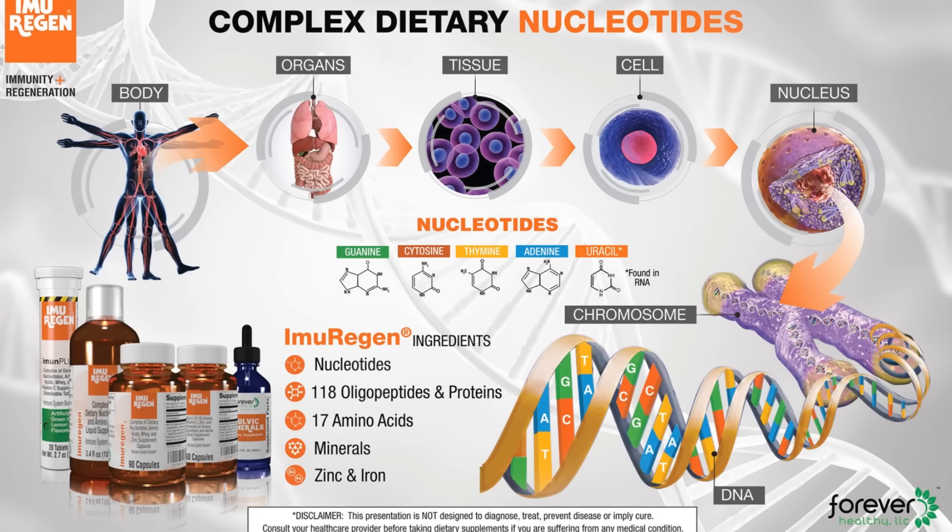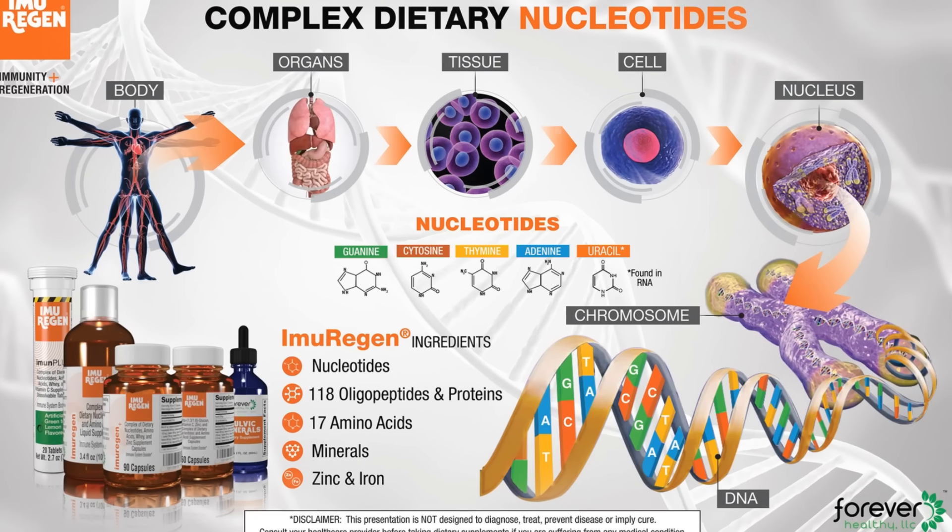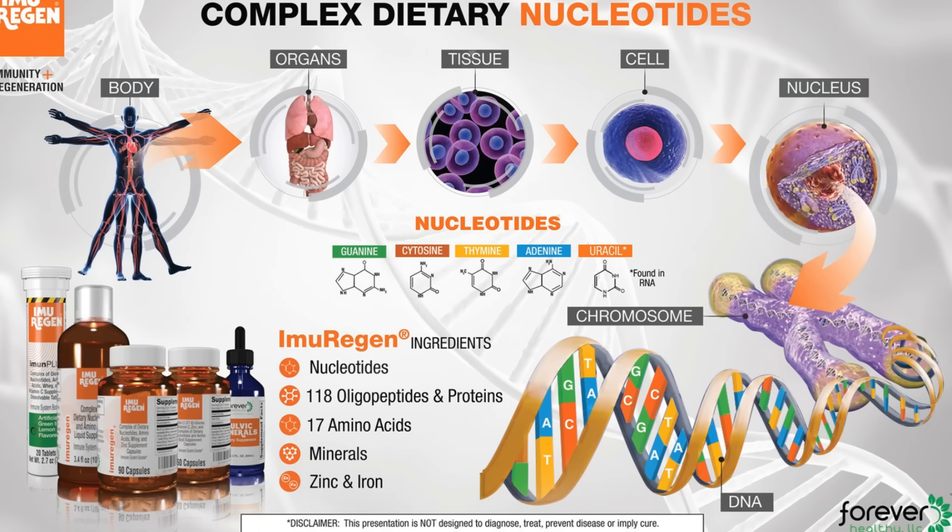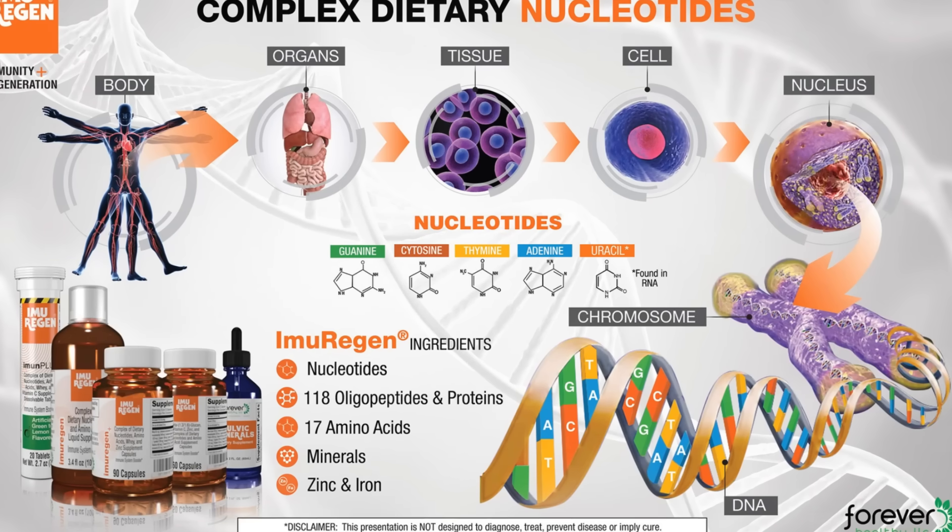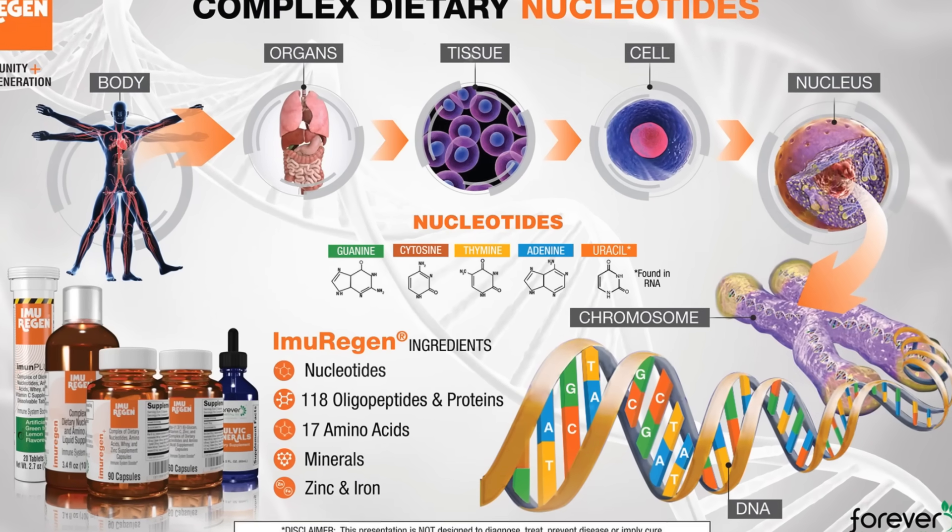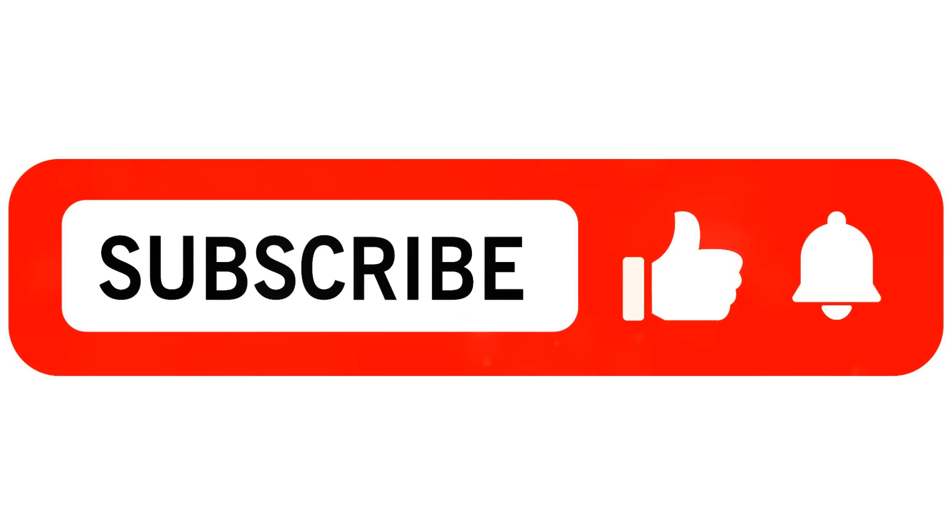This video is brought to you by Imuragin. Imuragin is a dietary supplement that contains nucleotides, oligopeptides, 17 amino acids and trace minerals. Like and subscribe.